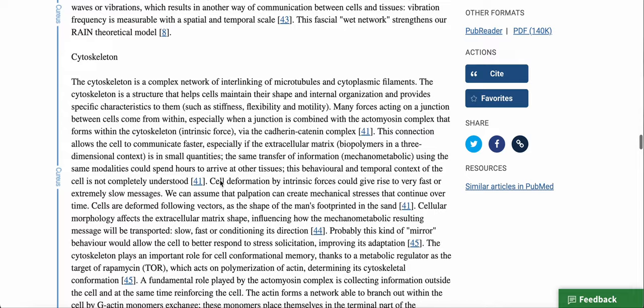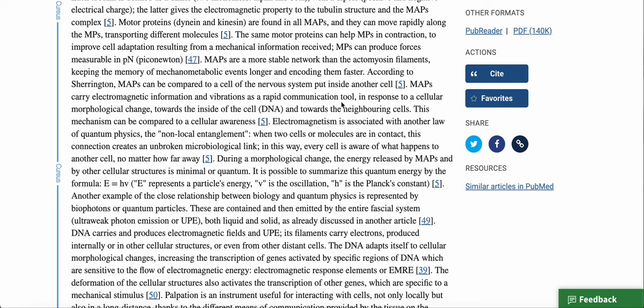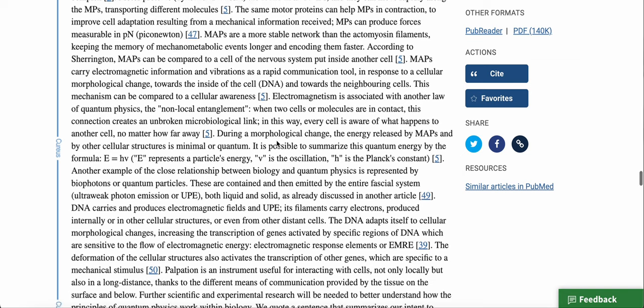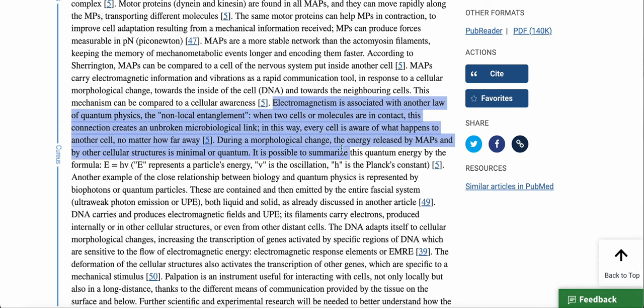We're going to get to another area under the microtubules. They're talking about electromagnetism. Electromagnetism is associated with another law of quantum physics, the non-local entanglement. When two cells or molecules are in contact, this connection creates an unbroken microbiological link. In this way, every cell is aware of what happens to another cell, no matter how far away. During a morphological change, the energy released by MAPs - MAPs are kind of like a stable network. They're called motor proteins, and they're a stable network that works in the muscle. So everything is working together.